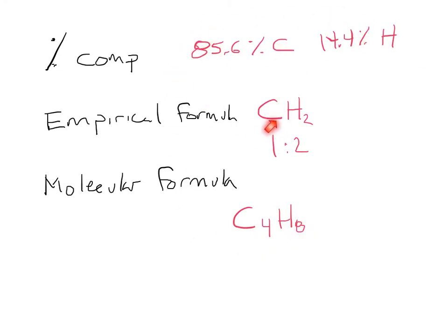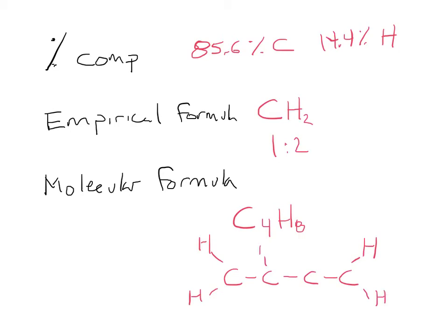This empirical formula could correspond to different molecular formulas as well, but let's say it was just that one. So what that means is this molecule is composed of four carbons and eight hydrogens. The molecular formula tells us what the molecule actually looks like and gives us a lot more of a picture of what this molecule is, how it will react, and what kinds of things we can do with it.